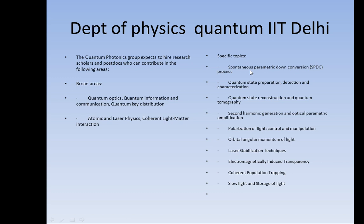This is a broad area, further divided into specific topics including spontaneous parametric down-conversion (SPDC process), quantum state preparation, detection and characterization, quantum state reconstruction and quantum tomography, second harmonic generation and optical parametric amplification, polarization of light, orbital angular momentum of light, laser stabilization techniques, electromagnetically induced transparency, coherent population transfer, and slow light and storage of light.